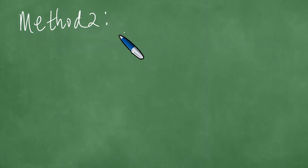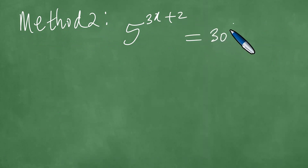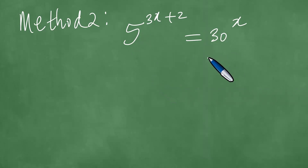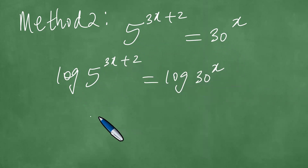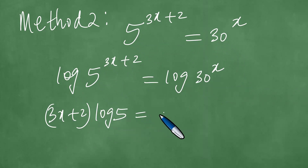In method two, we have 5 to the power 3x plus 2 equals 30 to the power x. Since we're dealing with an exponential equation with base 5 and base 30 (which is 5 times 6), we can apply the common logarithm directly: log of 5 to the power 3x plus 2 equals log of 30 to the power x, giving us 3x plus 2 times log of 5 equals x times log of 30.